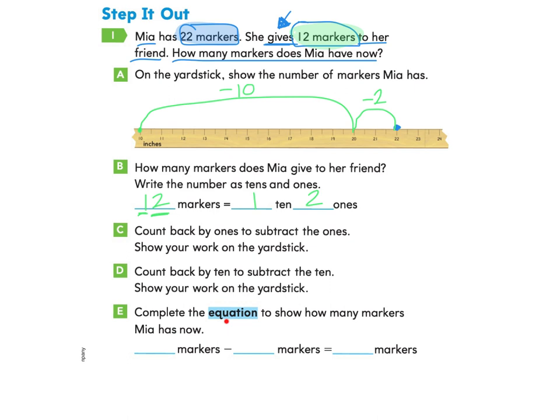So now we're ready to look at part E. Complete the equation to show how many markers Mia has now. So first she had 22 markers. And how many did she give to her friend? That's right, she gave 12. So we will write take away 12 markers. And then what was the answer? What did that equal when we had 22 take away 12? We got the answer of ten. So we will write the answer here, ten markers.